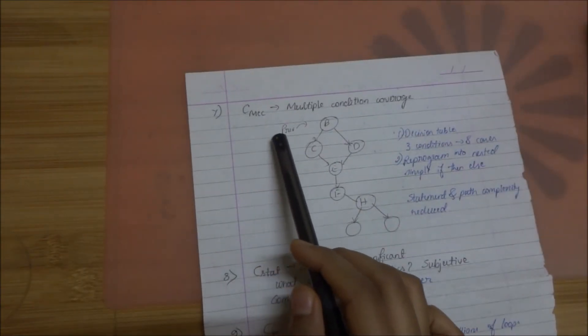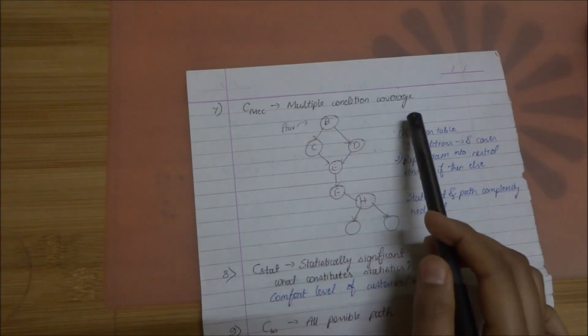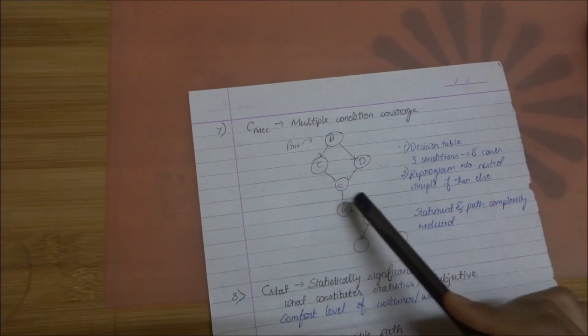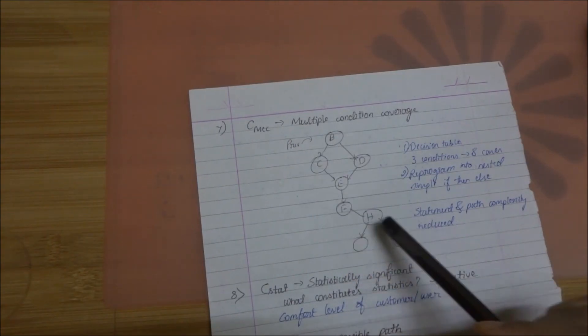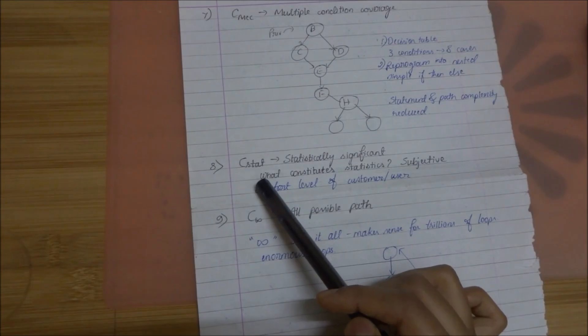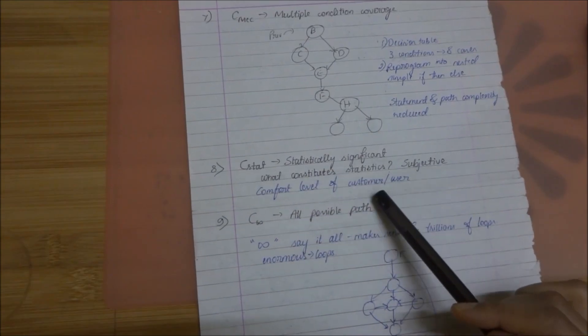The seventh one is CMCC. It stands for multiple condition coverage. As the name tells multiple conditions have to be traversed before coming to a conclusion. The eighth one is CSTAT. This represents statistically significant data. This is a bit tricky because what constitutes the statistics is subjective.